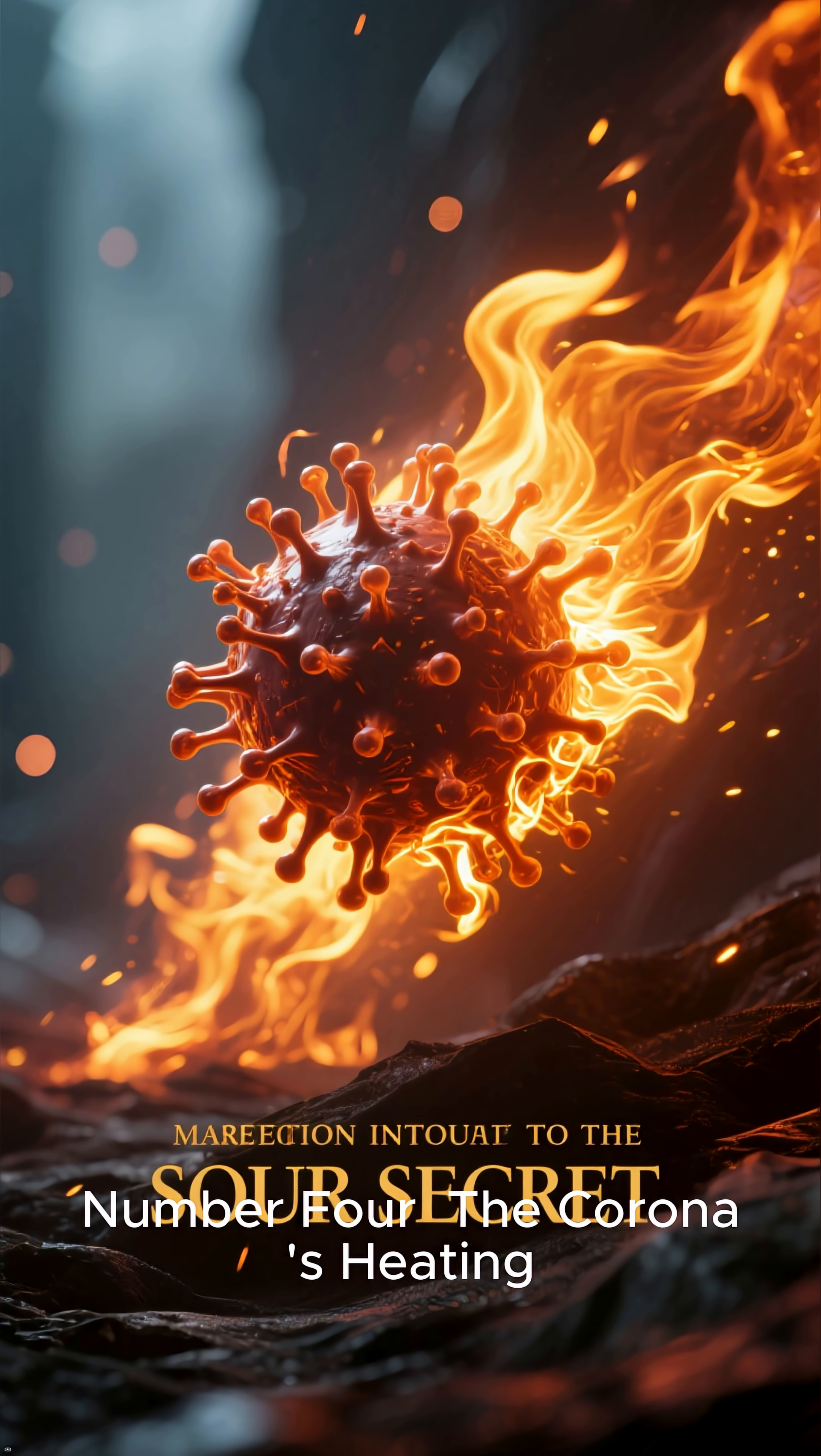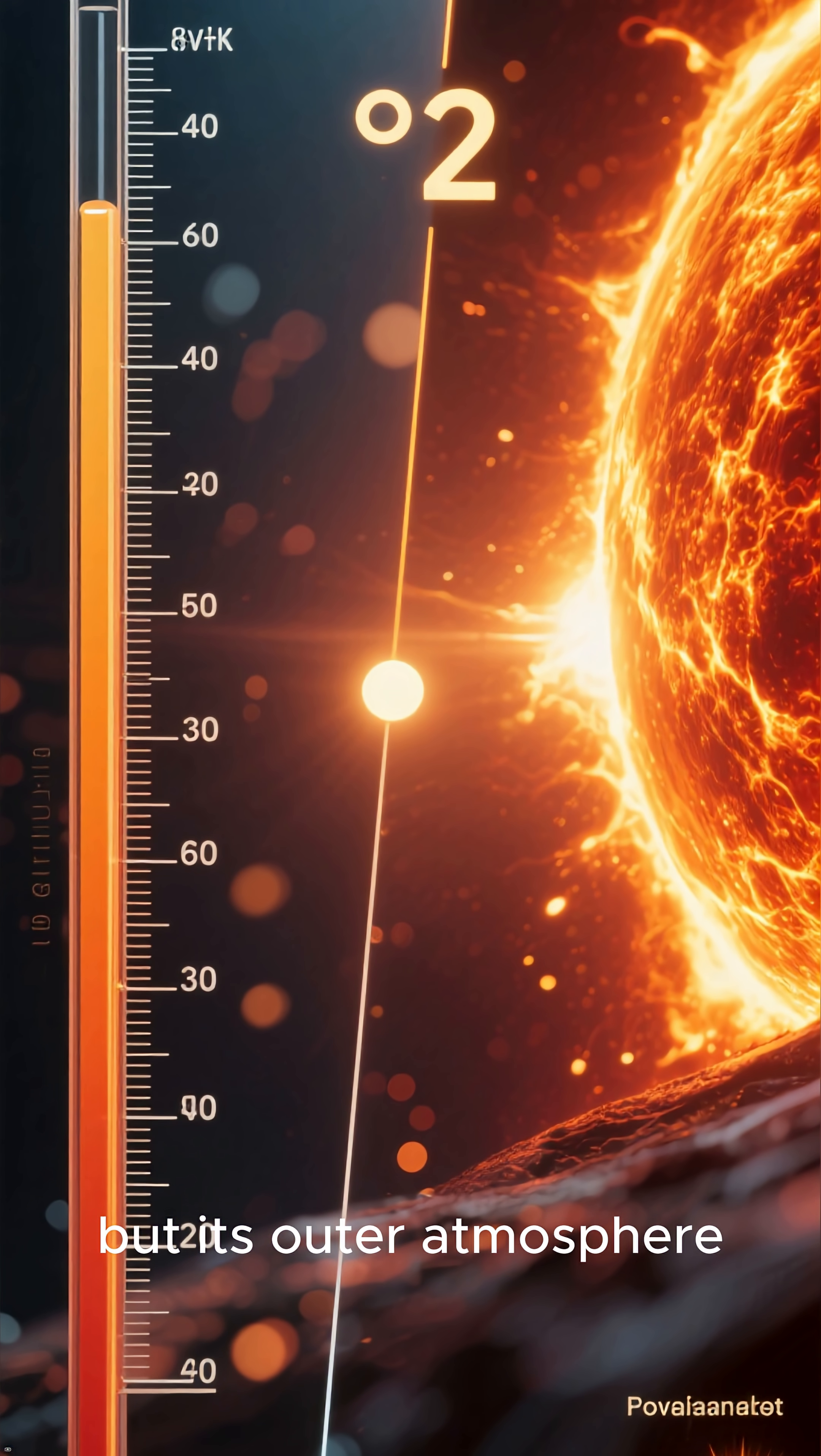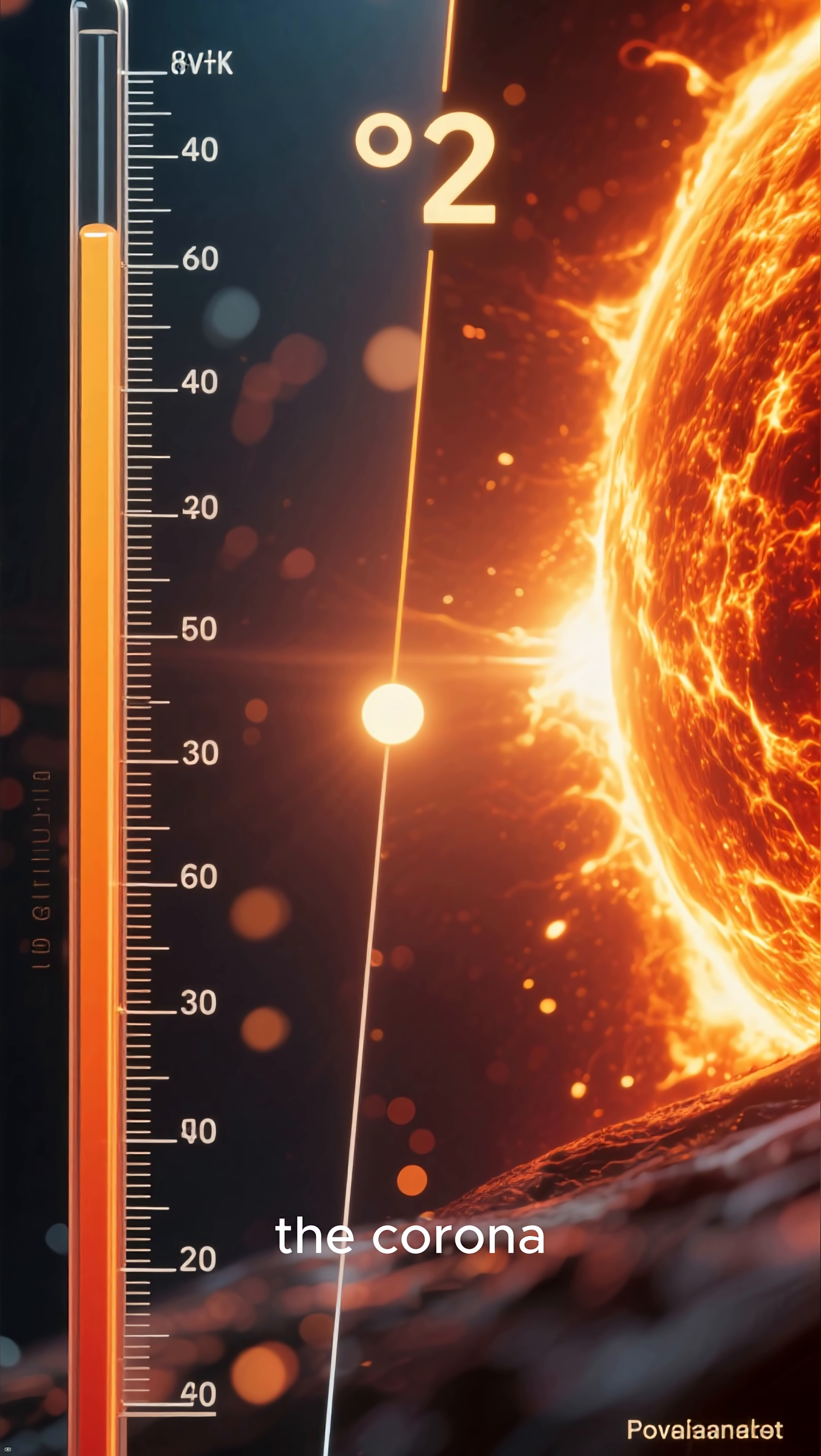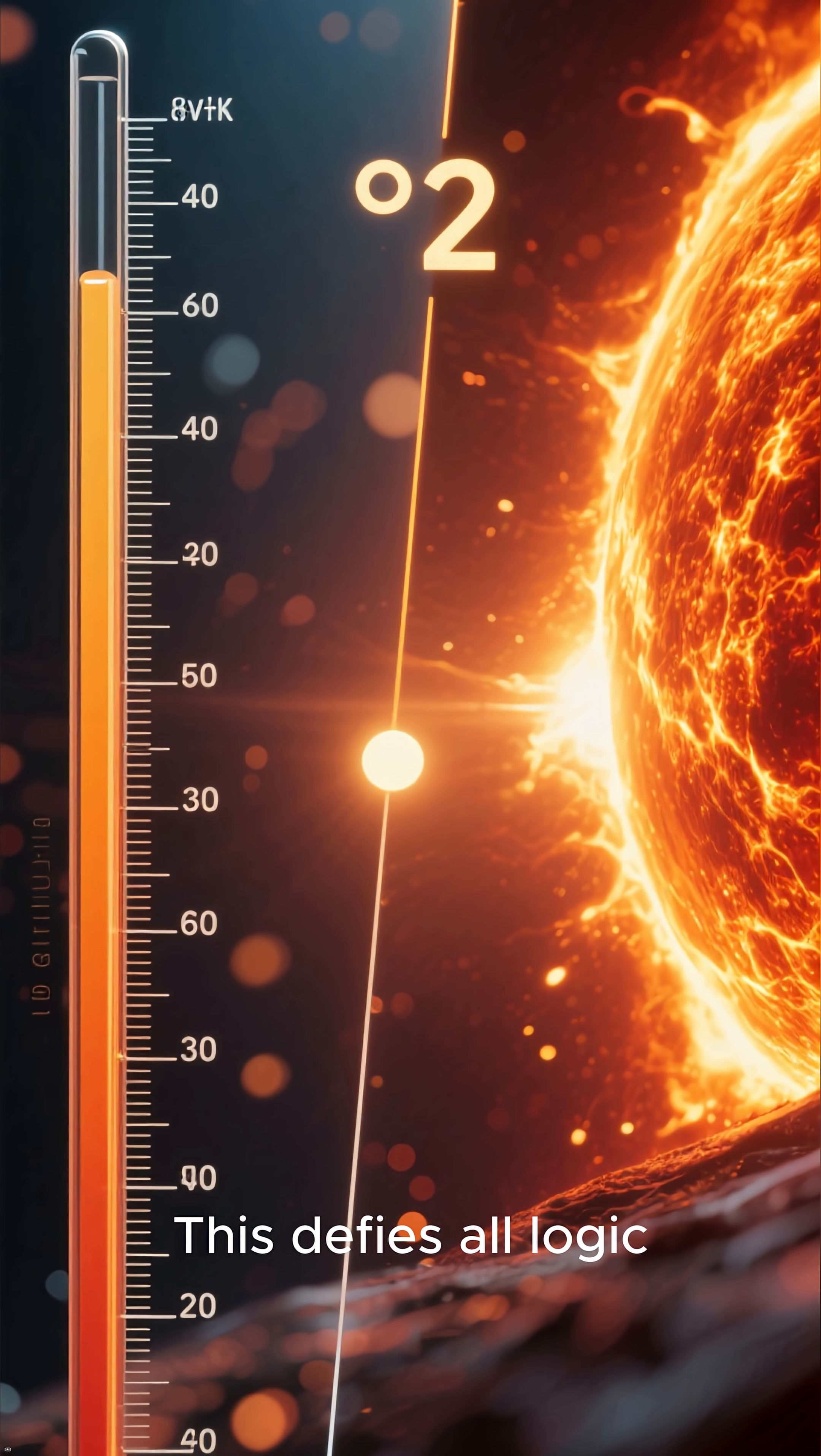Number 4: The Corona's Heating. The sun's visible surface is hot, but its outer atmosphere, the corona, is millions of degrees hotter. This defies all logic.